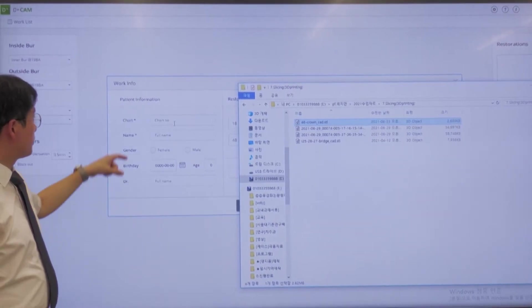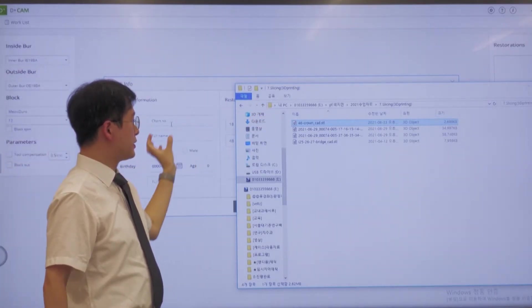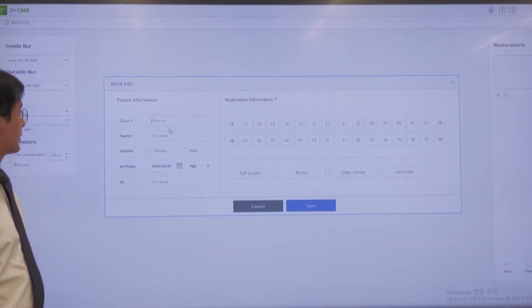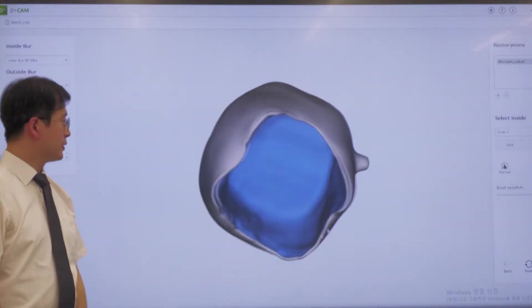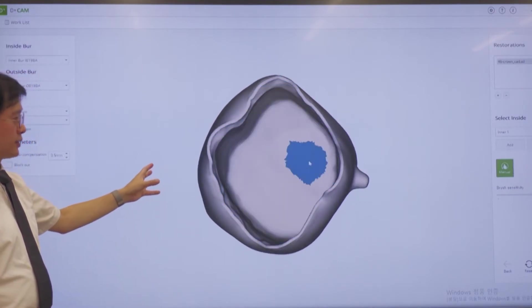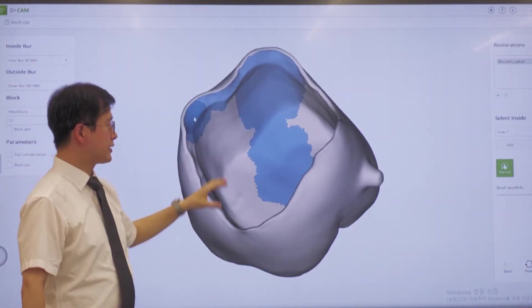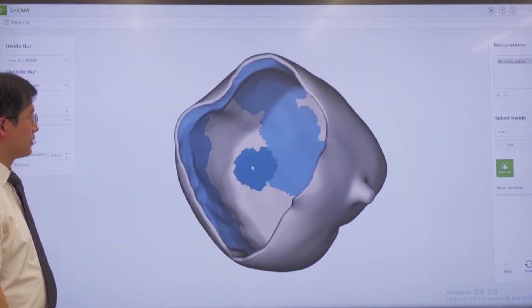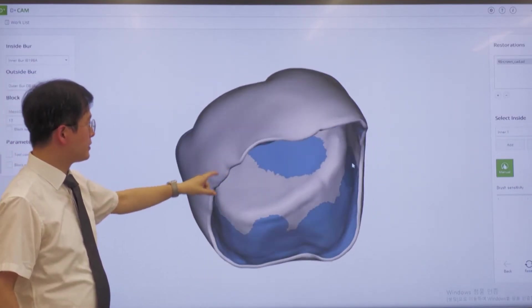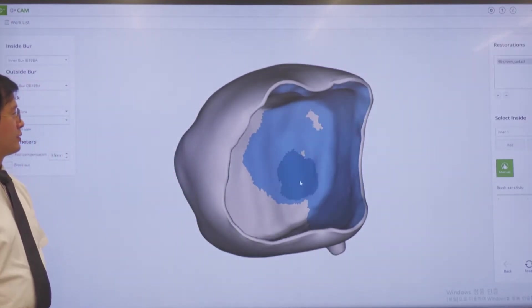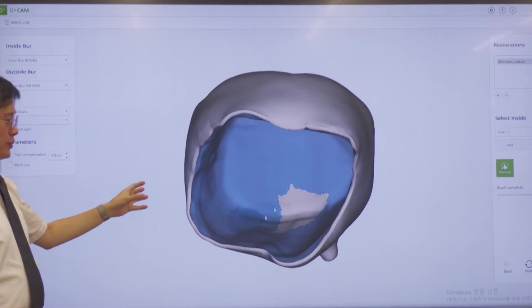We input patient information and import design data. We set the tooth number and the design is imported here. We draw cavity side, internal side first. Normally, the computer automatically detects the cavity side and margin line automatically, but I am showing you the manual selection to help you with your understanding.